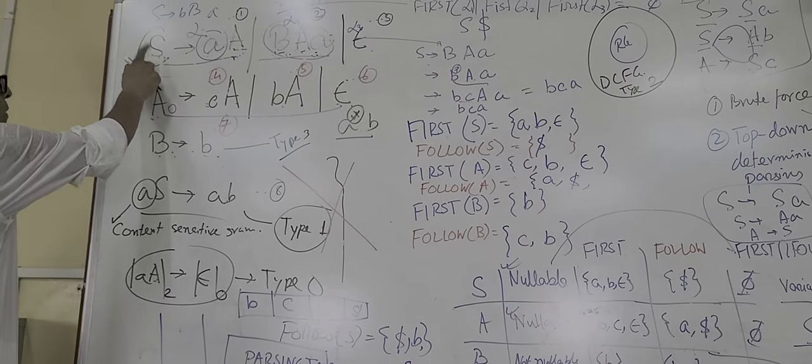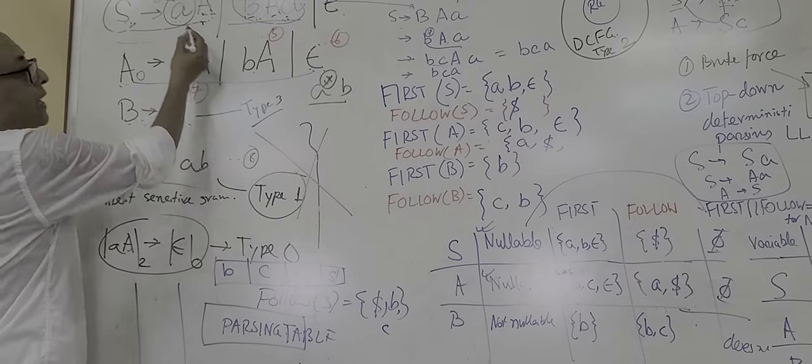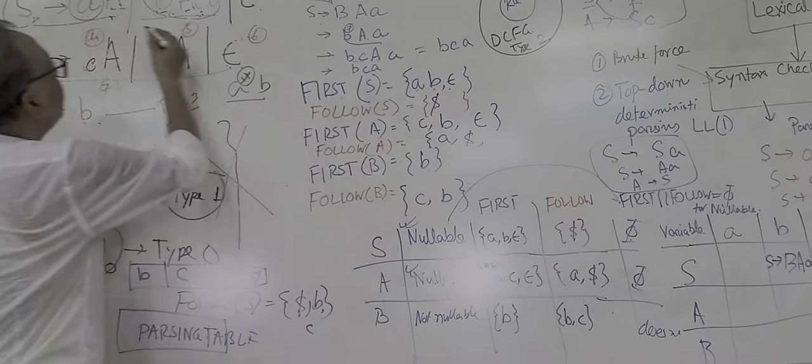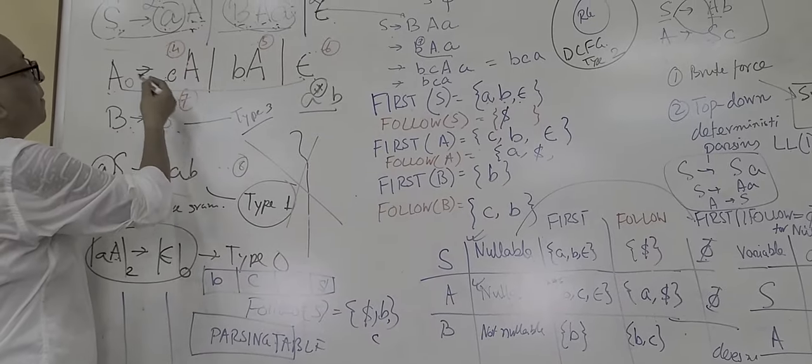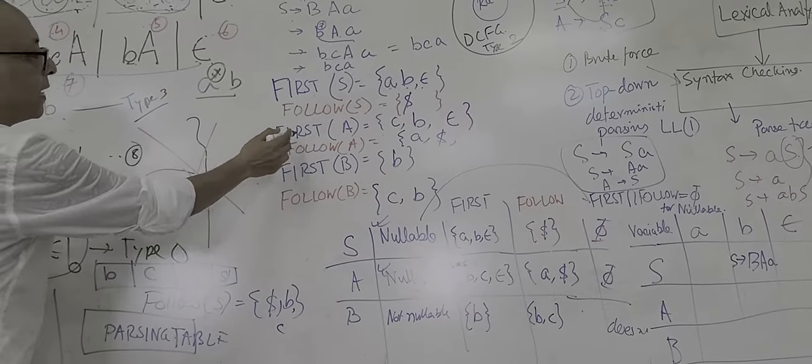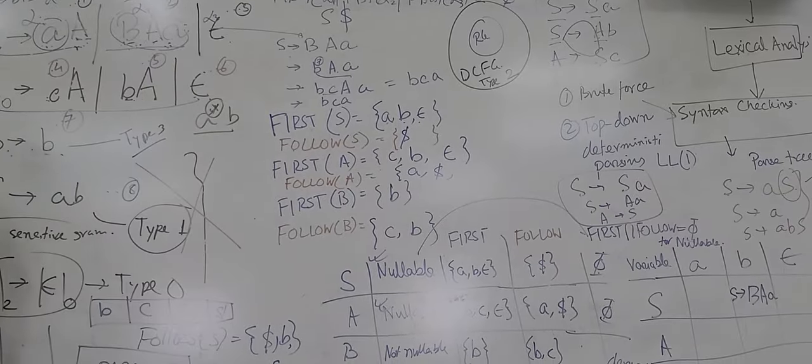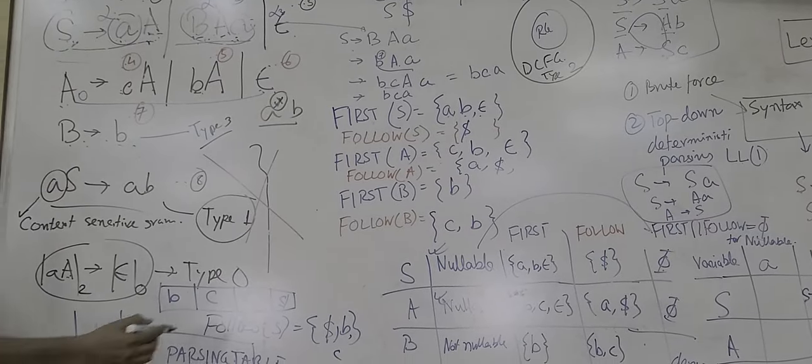So we first calculate First of S, and First of S is A, B, epsilon, J from here, and from here B. And First of A, like same case, C and E. And First of B is B.